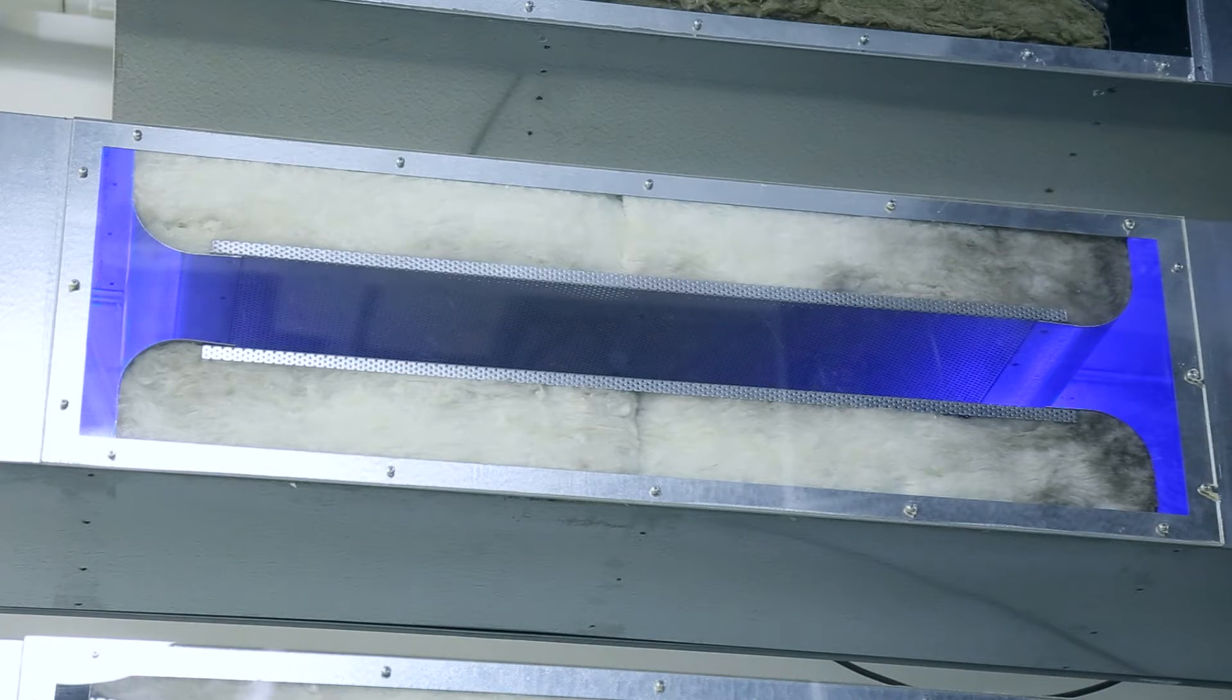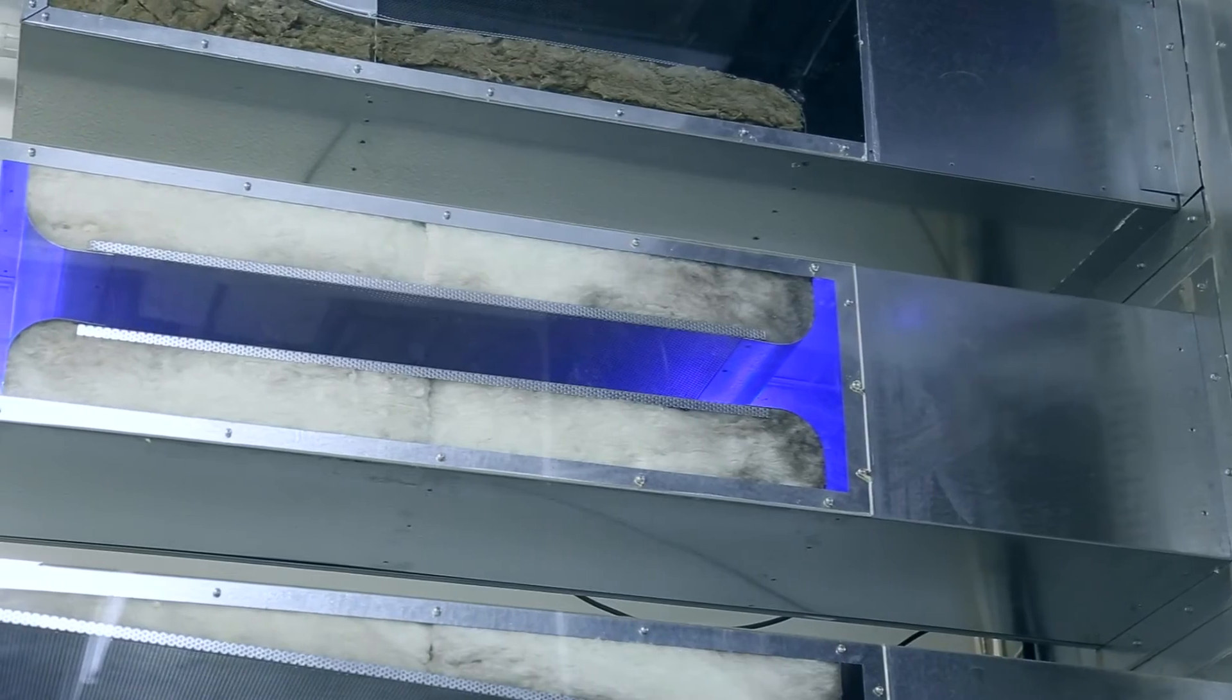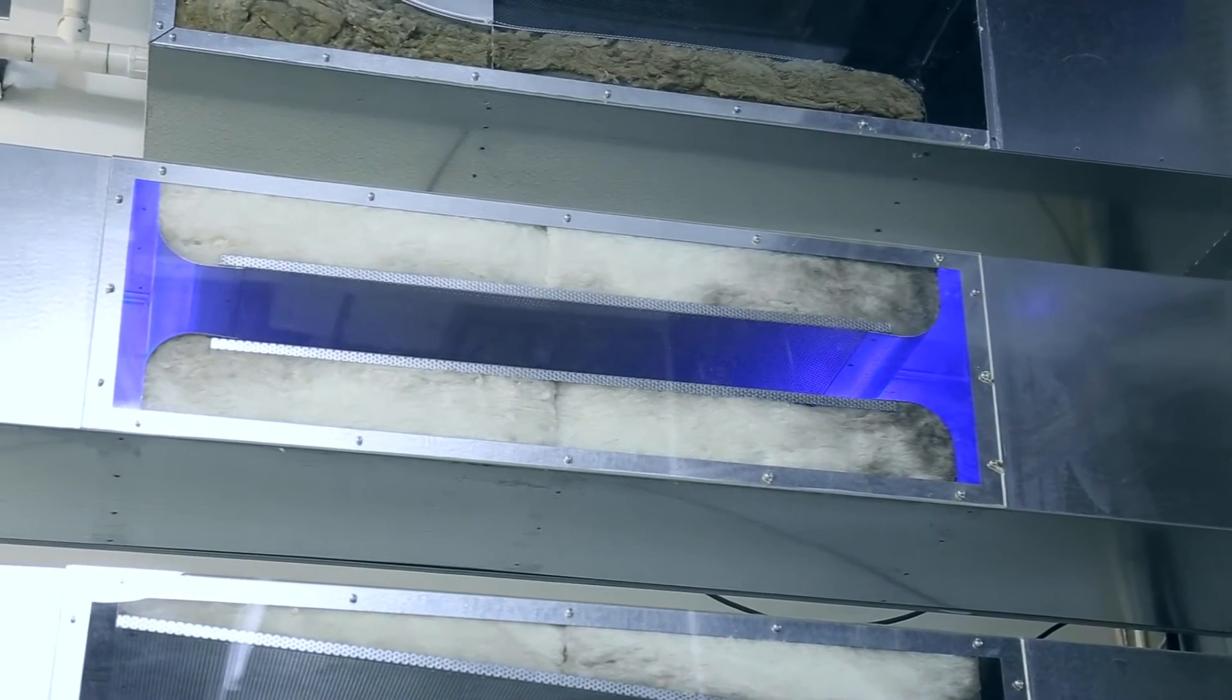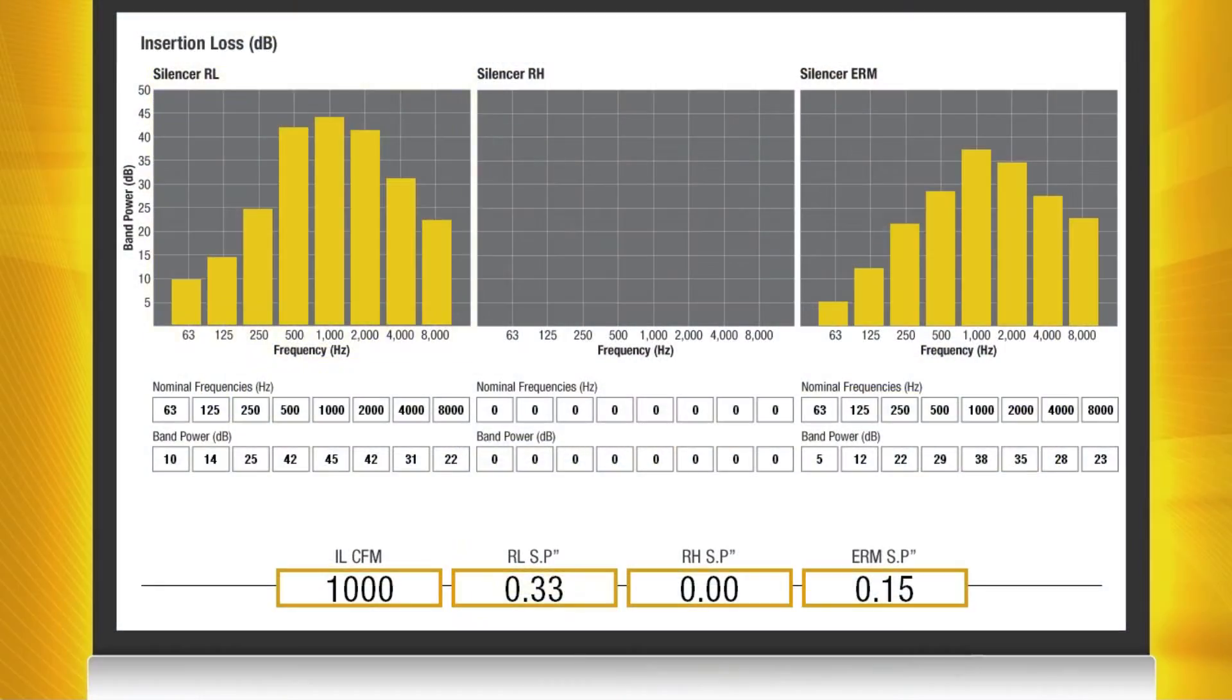As you can see the baffle configuration for the silencer is two parallel baffles with a standard fiberglass acoustic media. We'll run the sound through this silencer. The static pressure through the RL silencer is being measured at 0.35 inches. The insertion loss is also high throughout all octave bands.